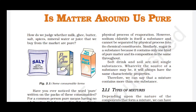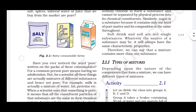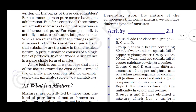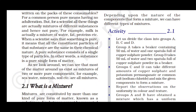Pure substances are non-separable by physical methods. We cannot separate pure substances by physical methods, whereas mixtures are separable by physical methods. We will learn about both physical and chemical methods. A pure substance consists of a single type of particle — when it is made up of only a single type of particle, we can say that it is a pure substance.